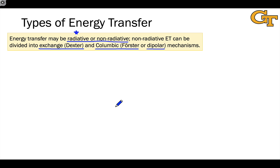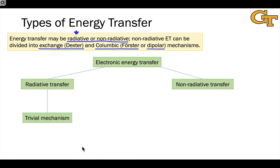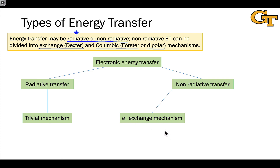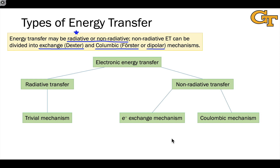The two non-radiative mechanisms are: the so-called exchange or Dexter energy transfer mechanism, and the so-called coulombic, Förster, or dipolar mechanism — all three terms mean the same thing. We can create a flow chart of the different types of energy transfer: radiative (trivial mechanism) versus non-radiative, which breaks into electron exchange or the coulombic/Förster mechanism. Which mechanism occurs has a profound impact on the kinetics, the distance dependence, and how we think about energy transfer taking place — so the distinctions here are very important.